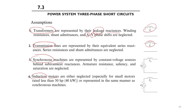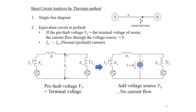Assumption number three: synchronous machines and induction motors are represented in the same fashion as a constant voltage source behind subtransient reactances. This same model applies to both the synchronous machine and the induction motor — consistent with the assumptions used in the past two examples.